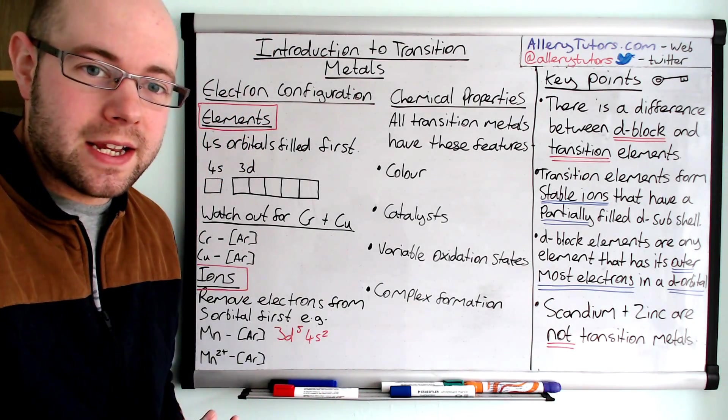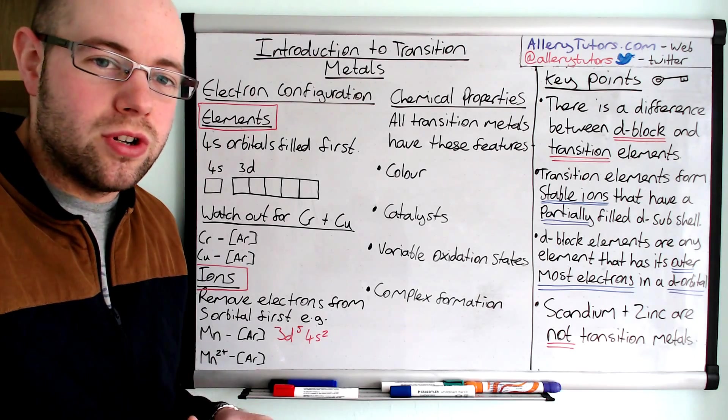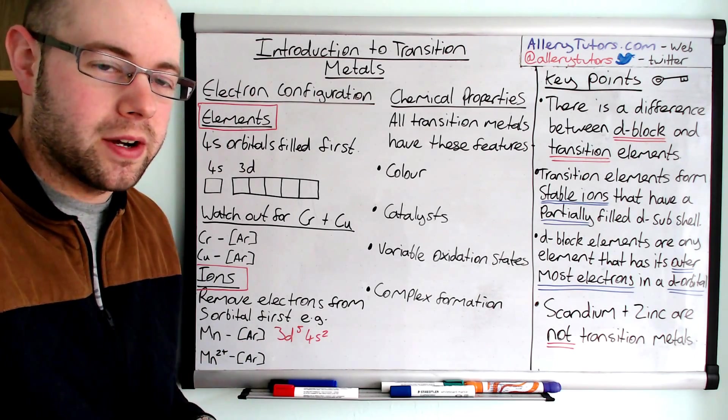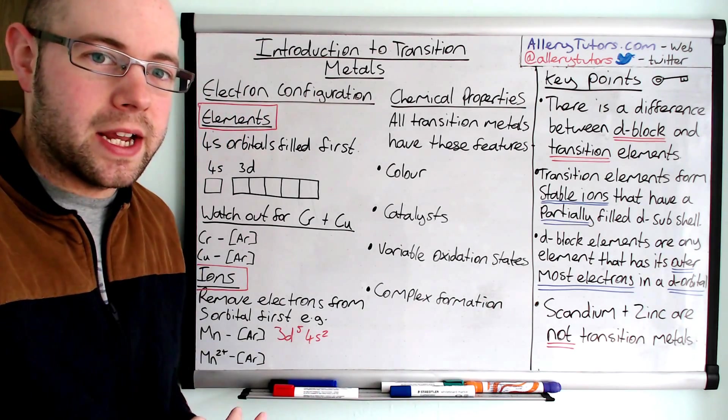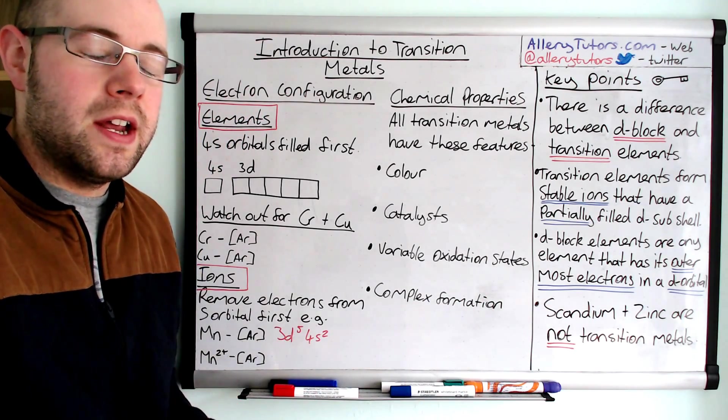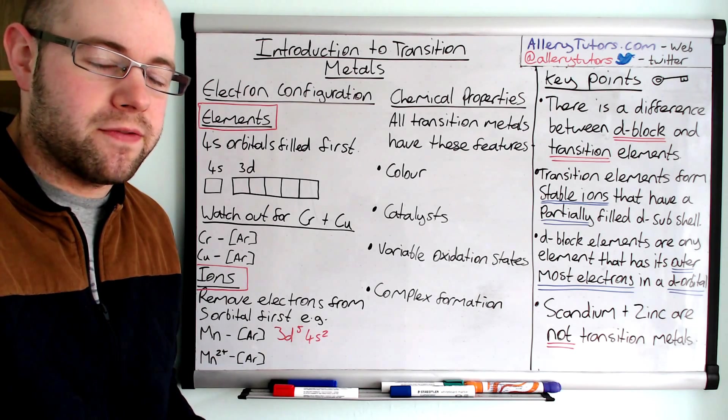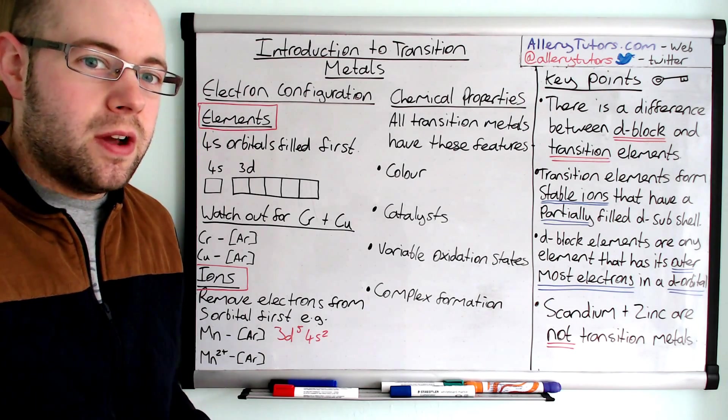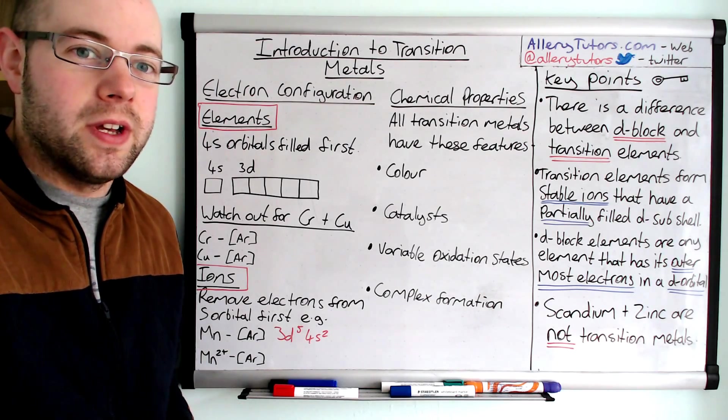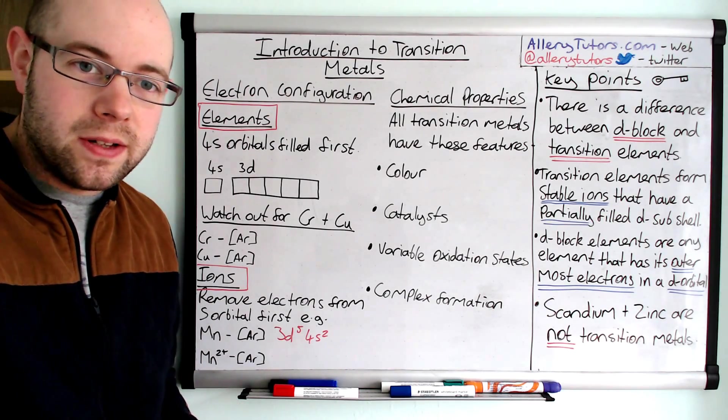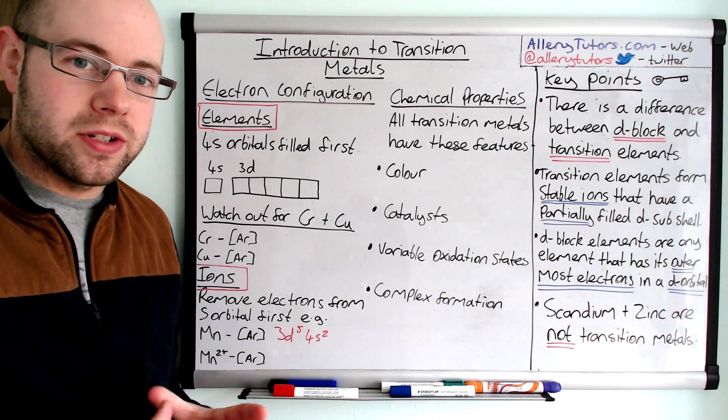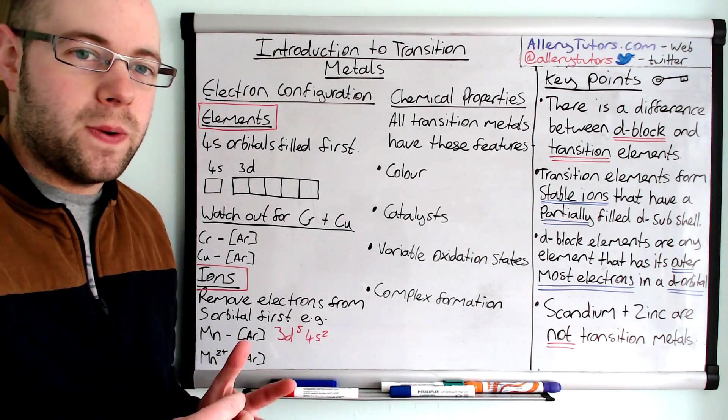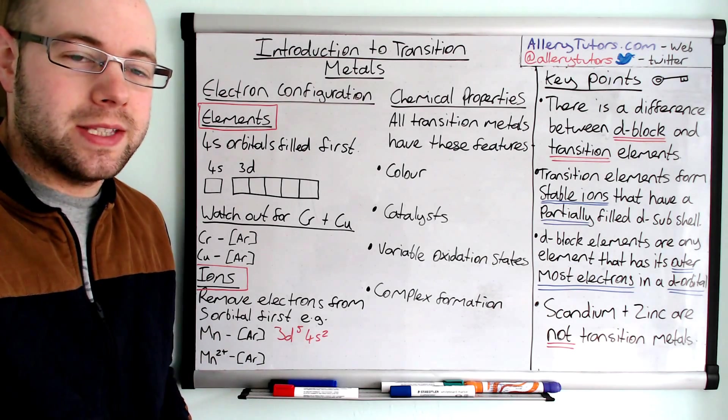So we have scandium and zinc. And scandium and zinc are classed as not transition metals. They are either side of the top row of the transition metal block. And scandium, for example, its stable ion is SC3+. Now, if we take three electrons away from a scandium atom, we're left with an ion that has an electron configuration with no electrons in the D-orbital. So because that is not partially filled, we say that scandium is not a transition element. And that's really important that you've got to know the difference between the two, as it's quite a common question for them to ask in the exam.